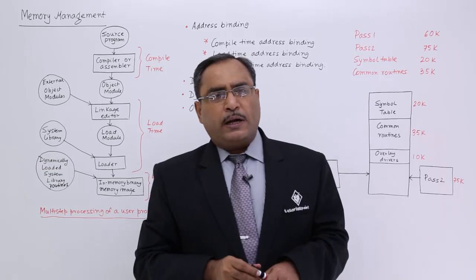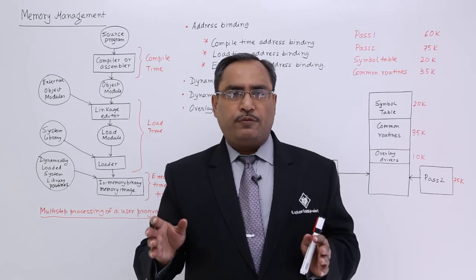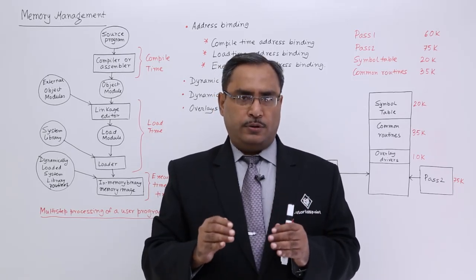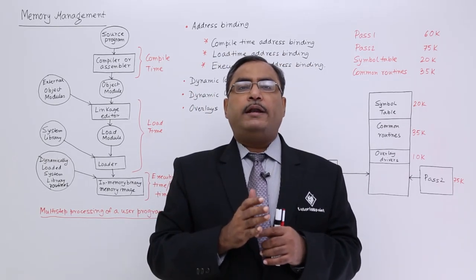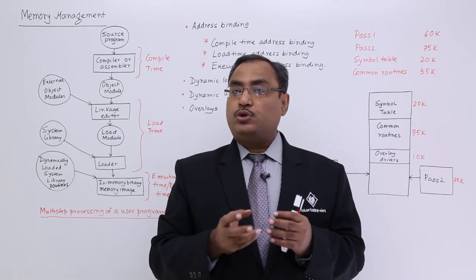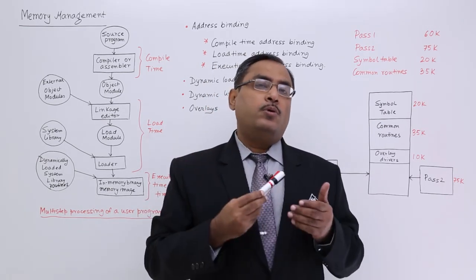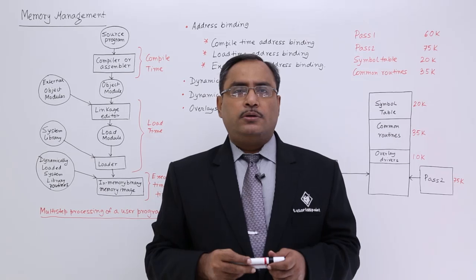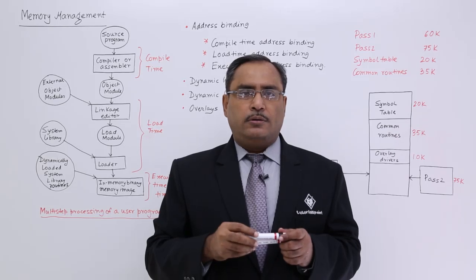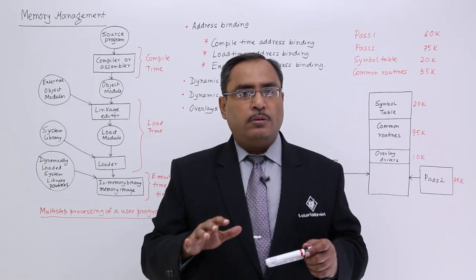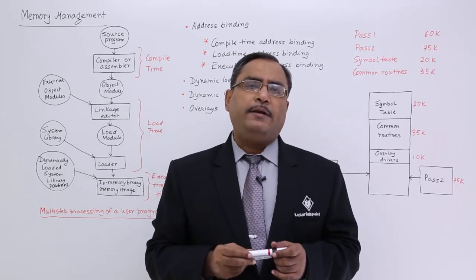What are they? If you purchase a train ticket for a reserved compartment — say you are travelling for 24 hours and you require a confirmed berth — when you purchase a confirmed train ticket, you get the train name, train number, departure time, coach number, and the berth, whether it is upper, lower, or middle. When you purchase the ticket, you get all the details in advance. You might be travelling a month later, but you know exactly where you are going to sit. The same thing happens in case of compile time address binding.